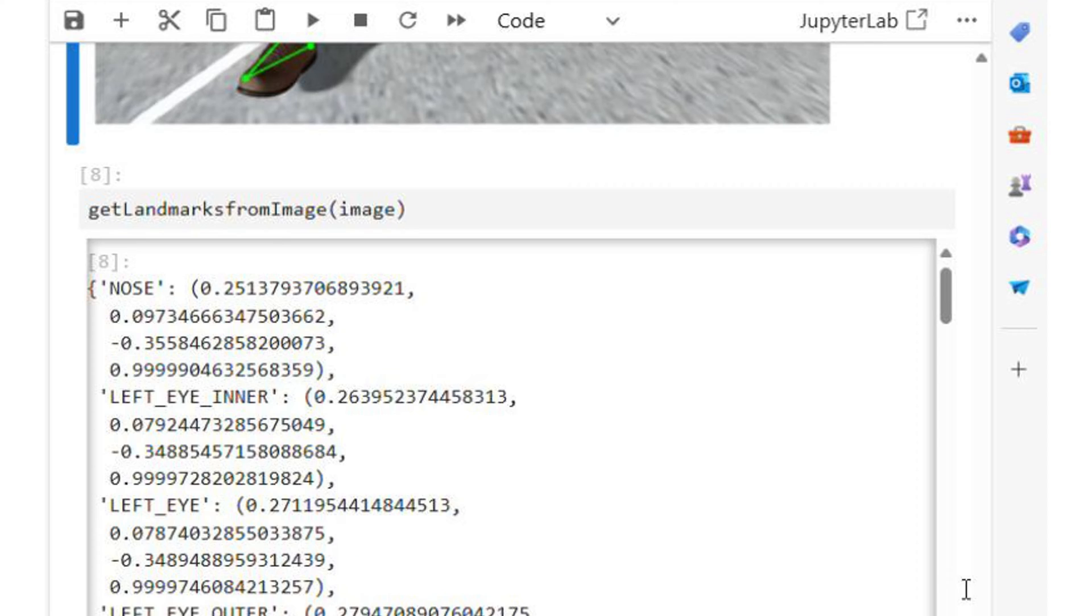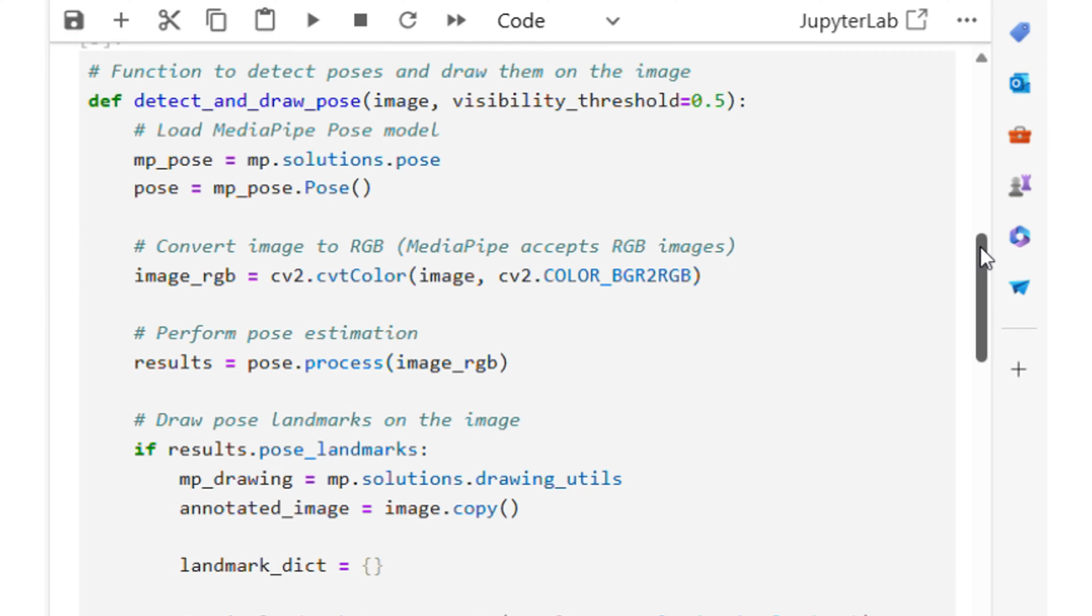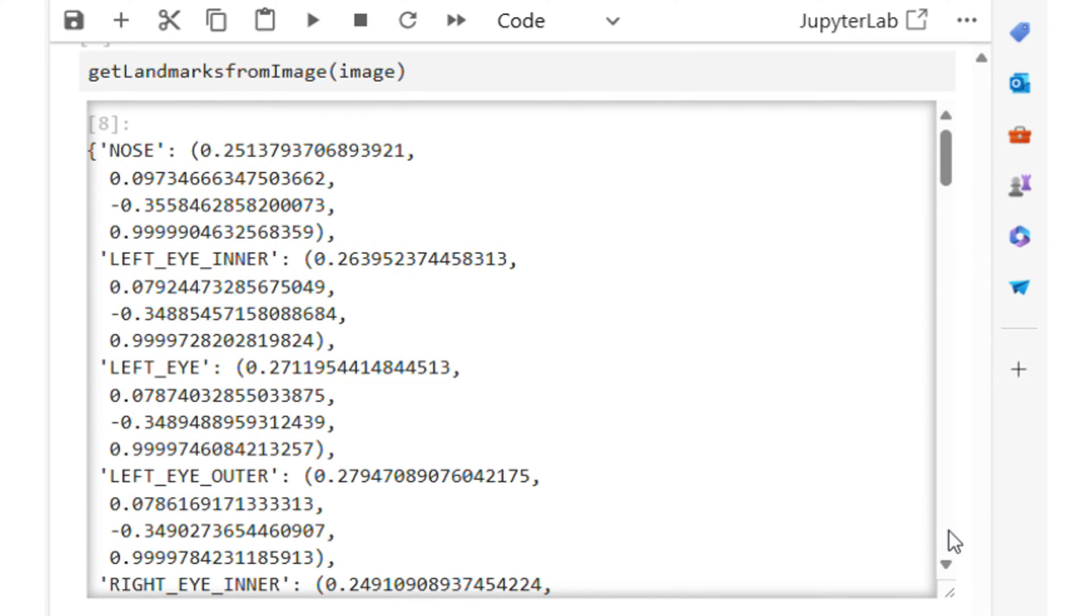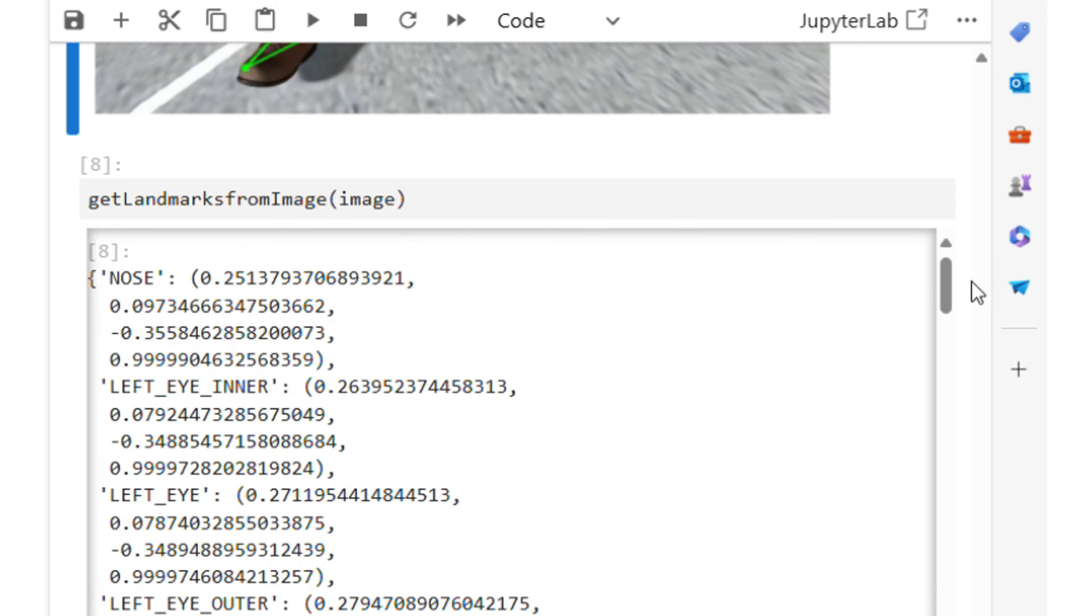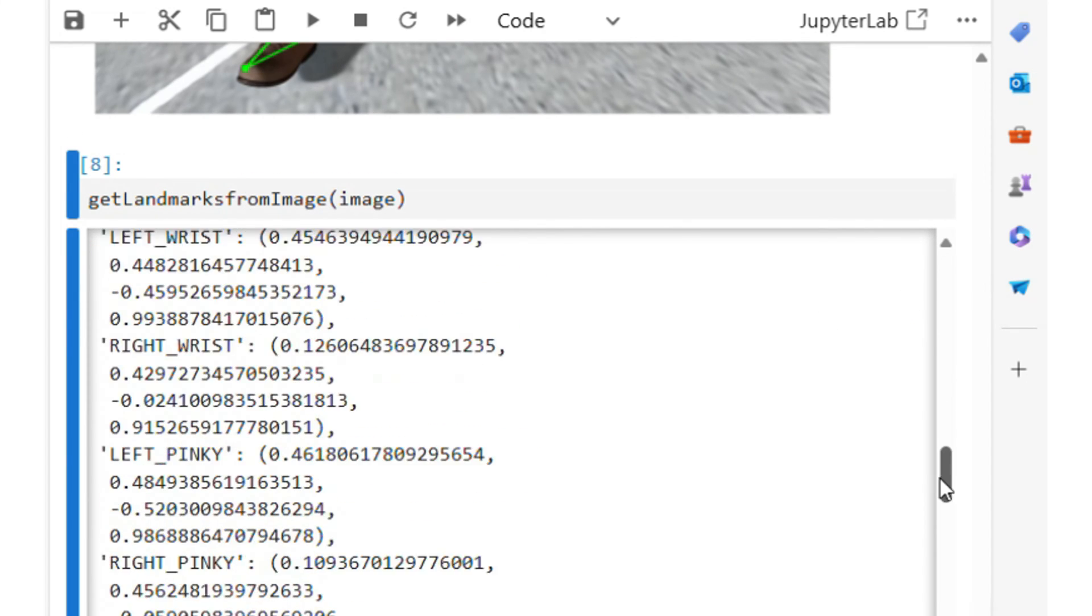The function returns x, y, z and visibility for all landmarks. The difference with the second function is that the x, y values are normalized and we have the z coordinate in the first function. Z is the depth of the landmark relative to the camera.